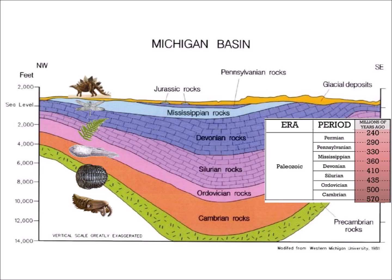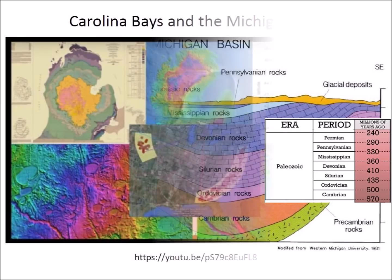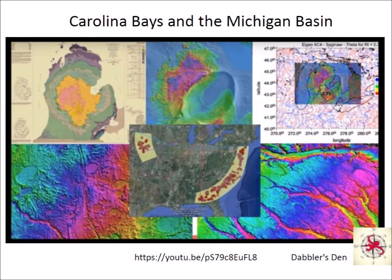Within this area of carbonate deposition, some localities subsided much more rapidly than others, such as the area that is now Lower Michigan, which is the dominant feature developed in the Great Lakes region during the Silurian. Chris Cottrell from Dabler's Den has a video that discusses geological stratigraphy. He suggests that the impact of a comet fragment on the Laurentide ice sheet could have formed the depression of the Michigan basin.